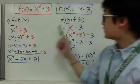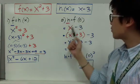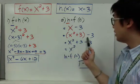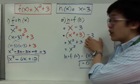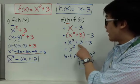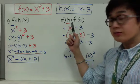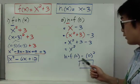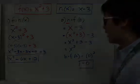The second composition is h of f of 0. Since h is the outer function, use x minus 3 and replace x with f of x, which is x squared plus 3. You get open-parenthesis x squared plus 3 close-parenthesis minus 3. Getting rid of parentheses: x squared plus 3 minus 3, and 3 minus 3 is 0, leaving x squared. However, the question asks for h of f of 0, not h of f of x, so substitute 0: 0 squared equals 0. Therefore, h of f of 0 equals 0.